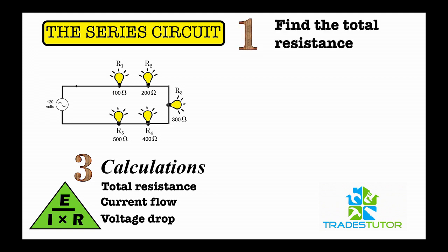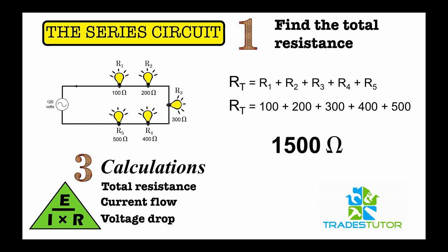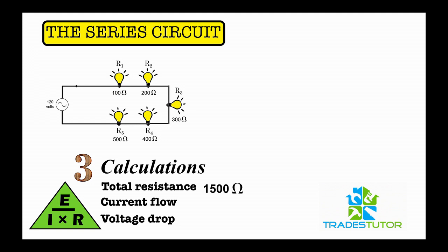First calculation: find the total resistance. Simply put, in a series circuit, you just add them all up. Okay. So there's your 100, 200, 300, so on and so forth. That gives you 1500 Ohms. And we'll put that down there. All right. So that's a series circuit, just add them all up.